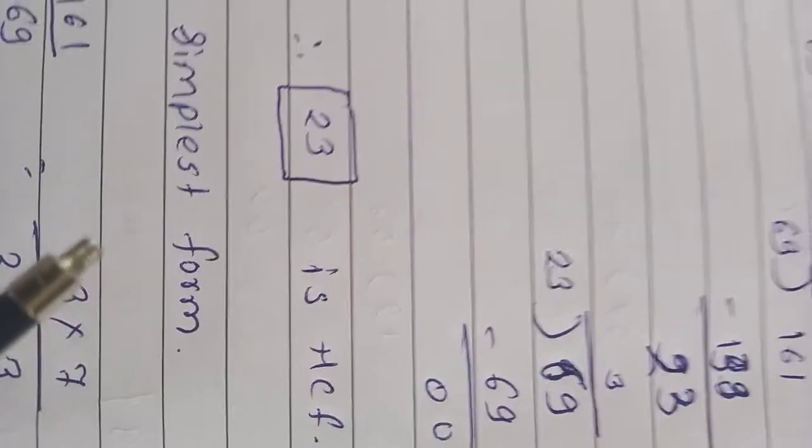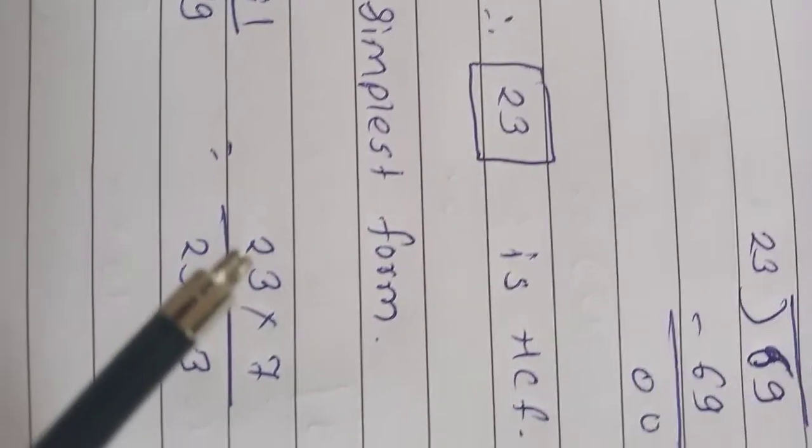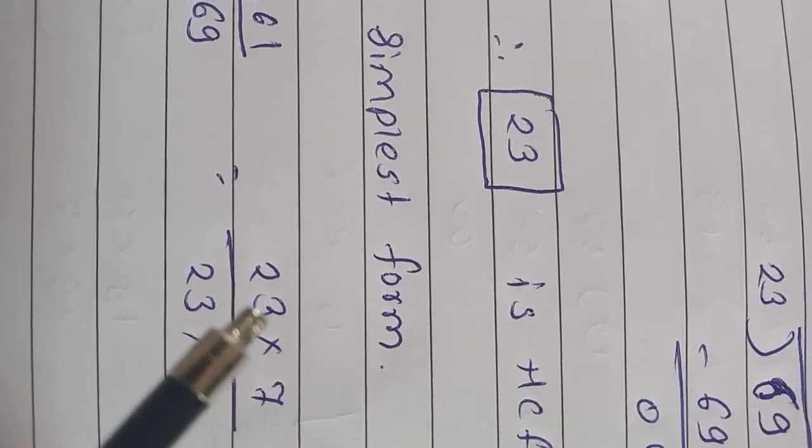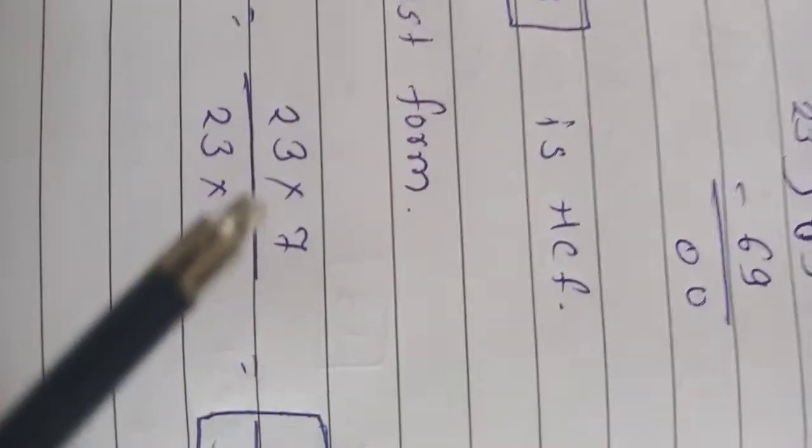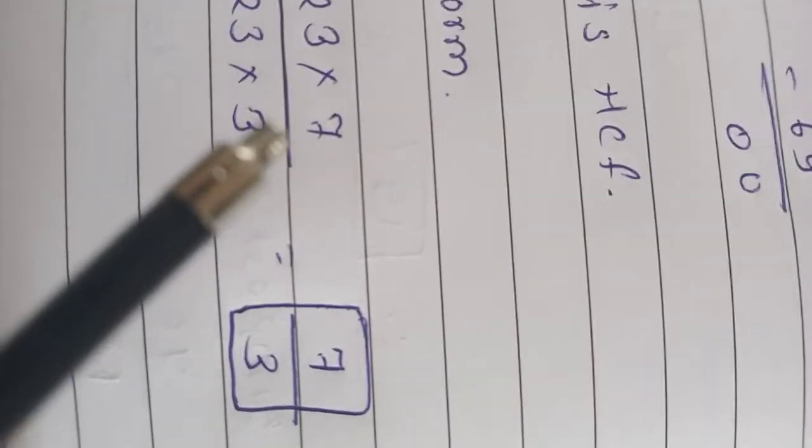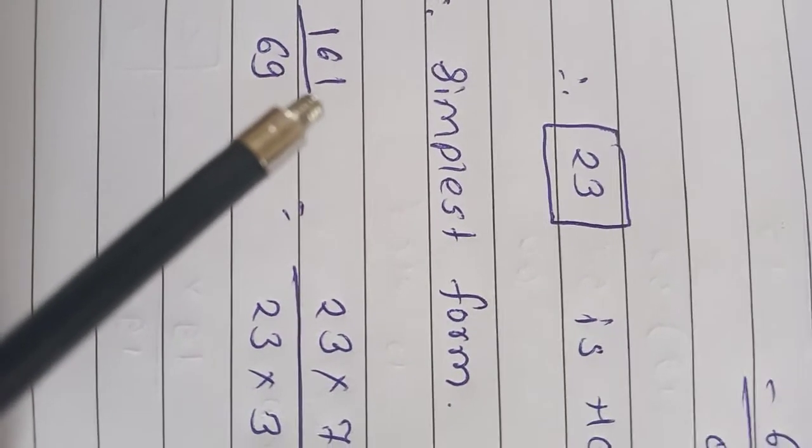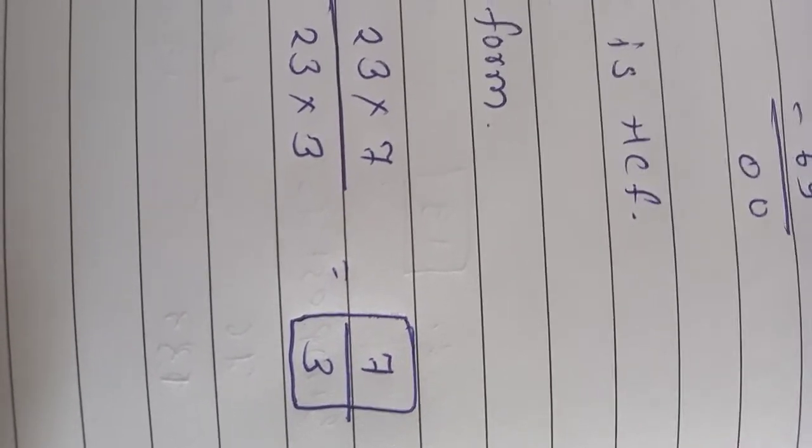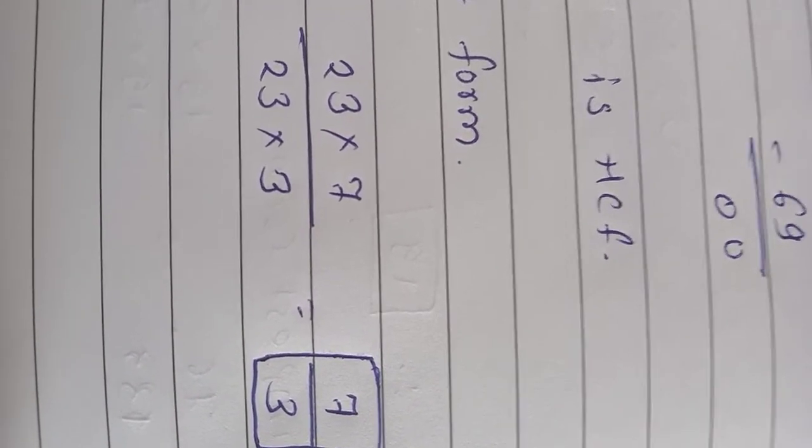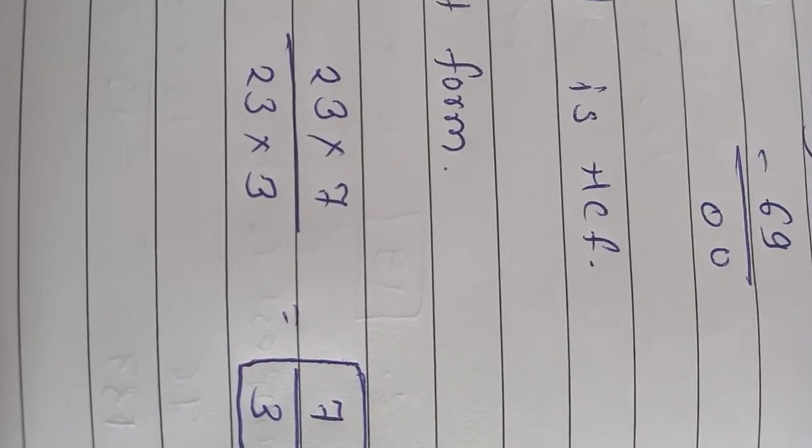Now we have to write this in the simplest form. 161 upon 69 equal to, 23 is common factor. 23, 7 are 161. 23, 3 are 69. 23 get cancelled. So 7 upon 3 is our answer. So simplest form of 161 upon 69 is 7 upon 3. We are going to see least common multiple, that is the LCM, in the next lecture.